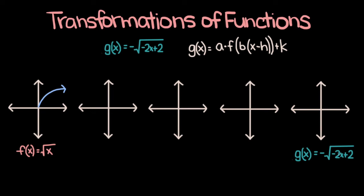The first individual transformation we're going to take a look at is the one caused by this negative sign out front. So let's say we have a function g1 of x, which is equal to negative square root of x. All g1 of x is, is negative f of x. And since g1 of x is negative f of x, g1 of x is going to be f of x reflected over the x-axis. So it's going to look something like this.